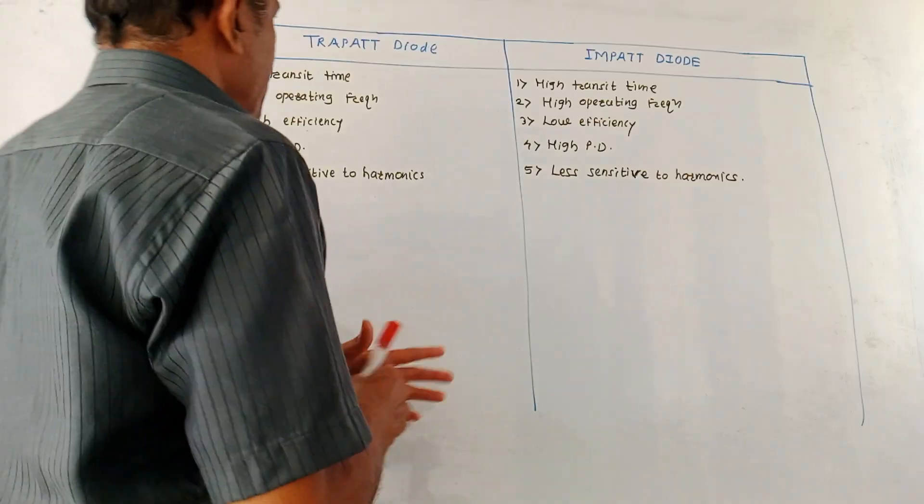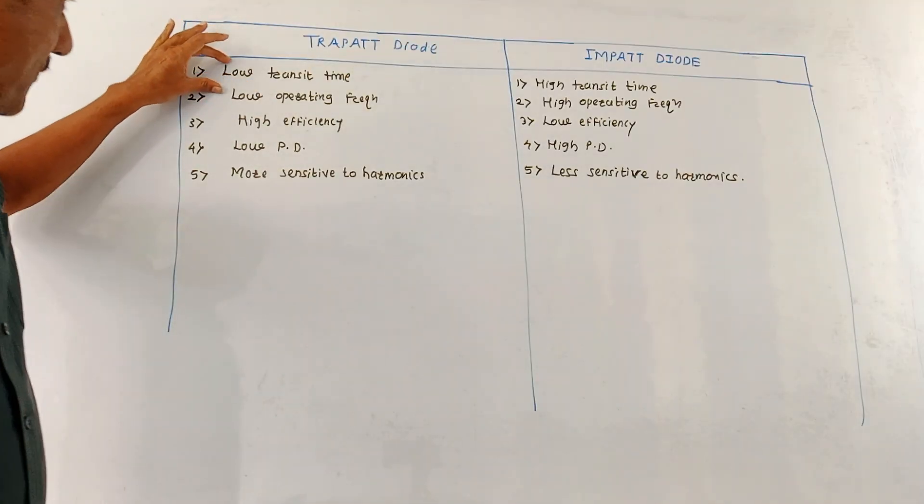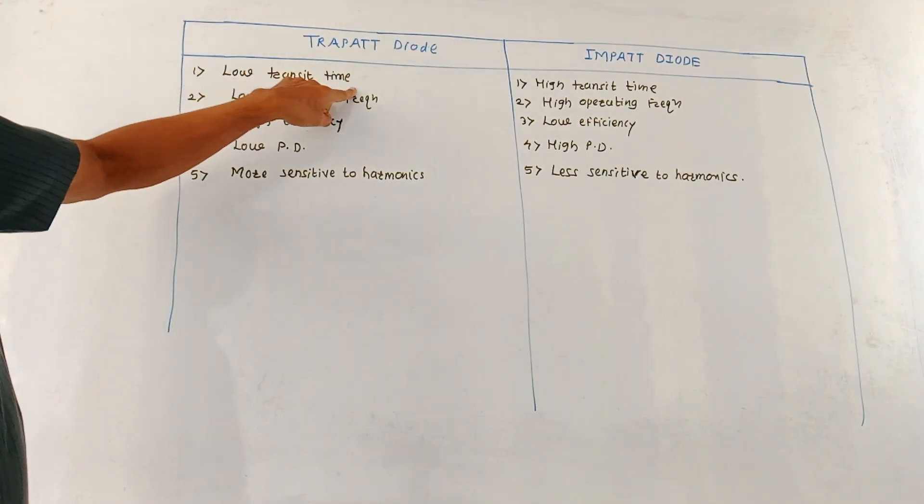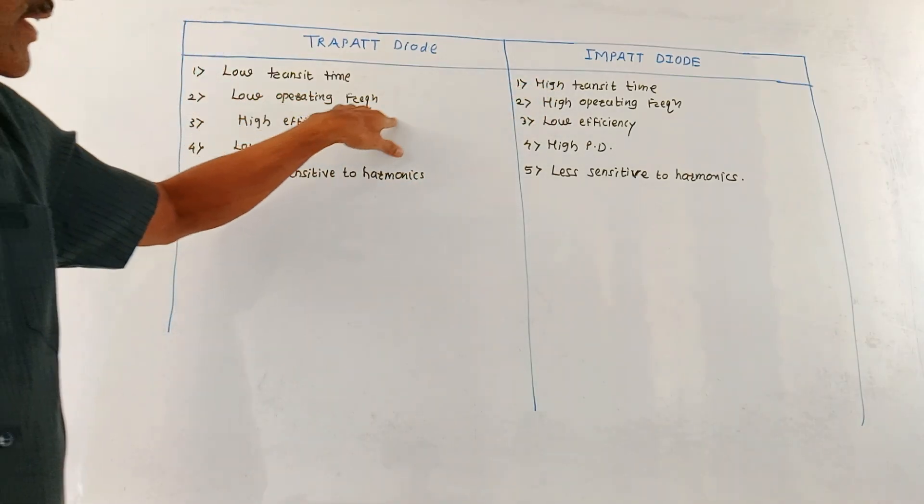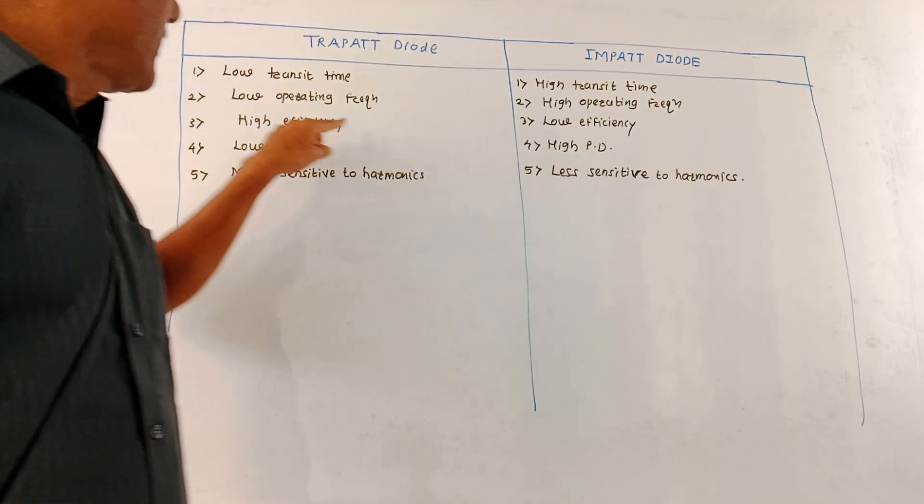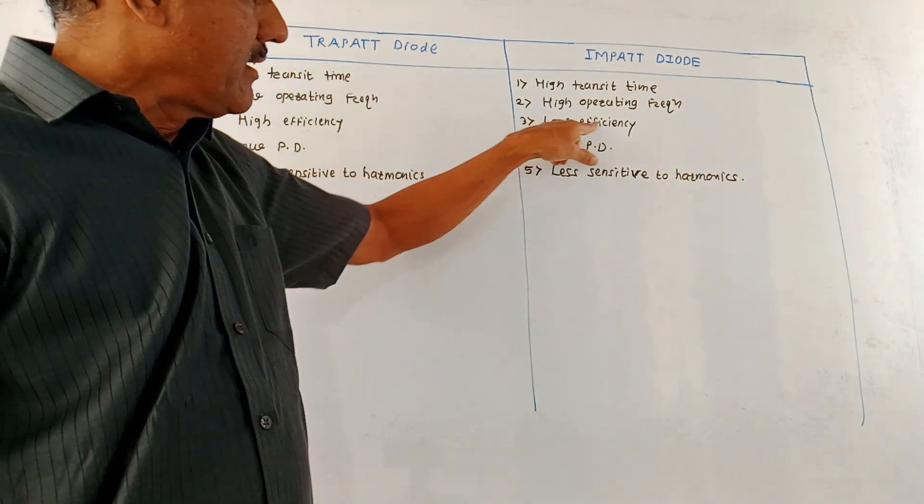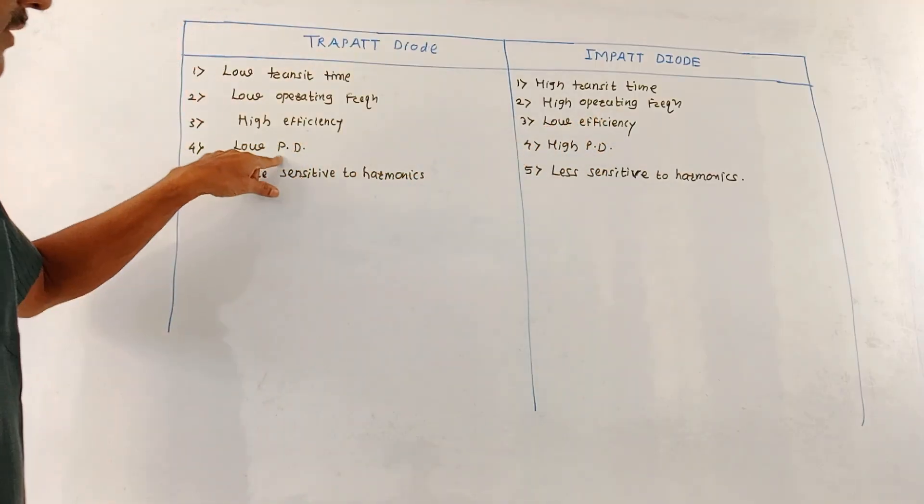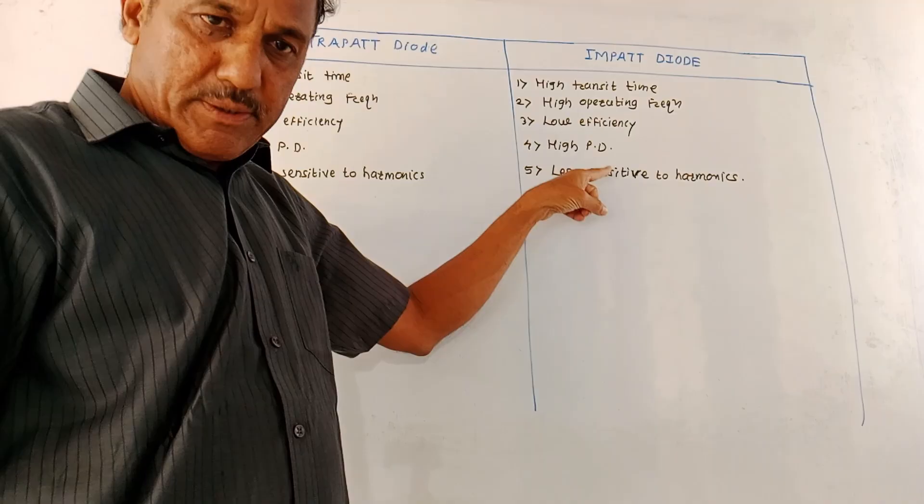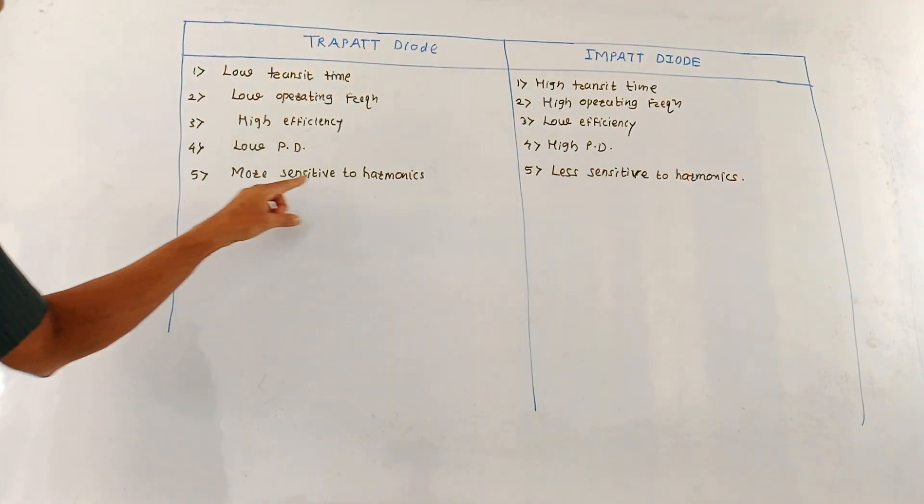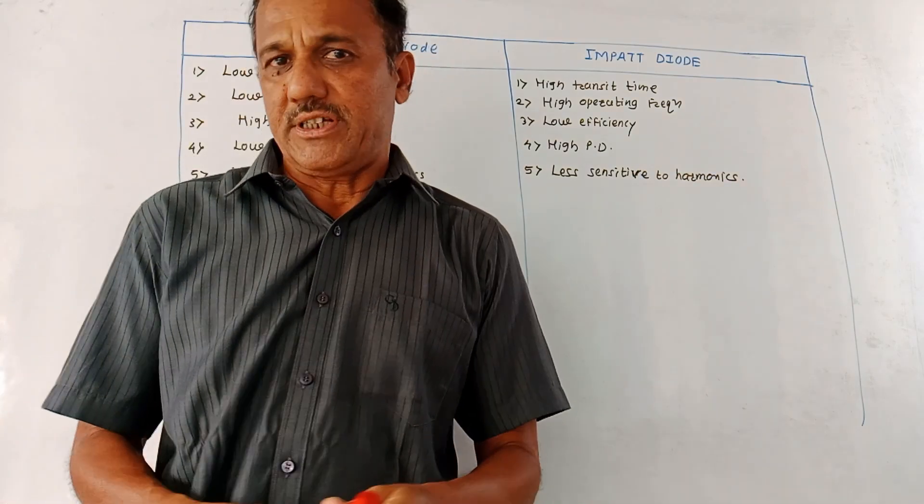The chart shows comparison between TRAPATT diode and IMPATT diode. In case of TRAPATT diode, the transit time is low. Here transit time is high. It is having low operating frequency. For IMPATT diode, operating frequency is high. Then efficiency of TRAPATT diode is comparatively high. It is low in IMPATT diode. Low power dissipation for TRAPATT diode. For IMPATT diode, power dissipation is high. And TRAPATT diodes are more sensitive to harmonics whereas IMPATT diodes are less sensitive to harmonics.